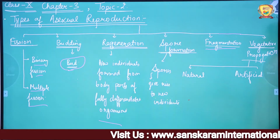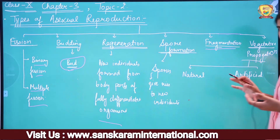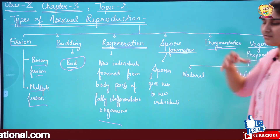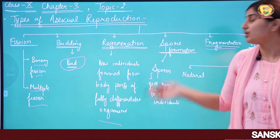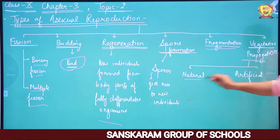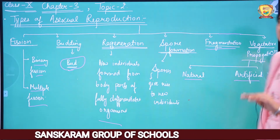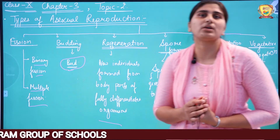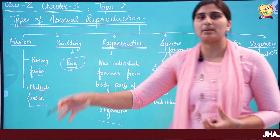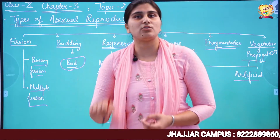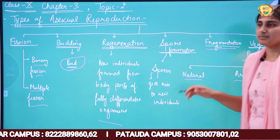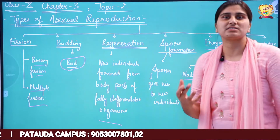The last type is Vegetative Propagation. As the name suggests, these are vegetative parts of the plant — stem, leaves, root — which are not normally associated with reproduction. If a new individual is formed from these vegetative parts, it is called Vegetative Propagation. It is of two types: natural and artificial. Some plants naturally undergo vegetative propagation — for example, mint (pudina): wherever its stem touches the ground, new roots form and a new organism is produced. Another plant, Bryophyllum, forms new plants from its leaves.